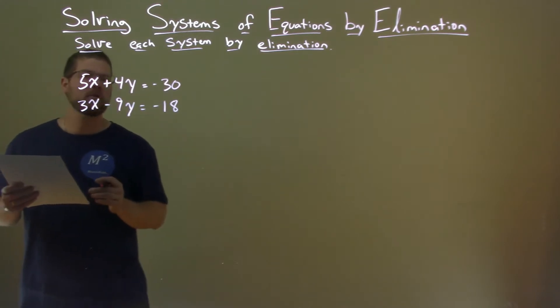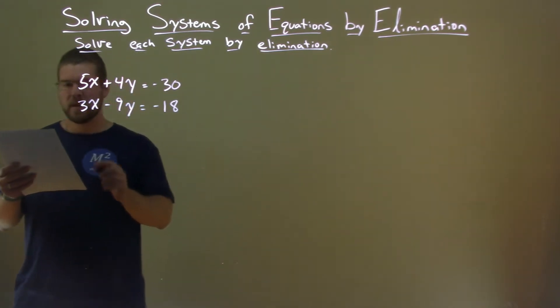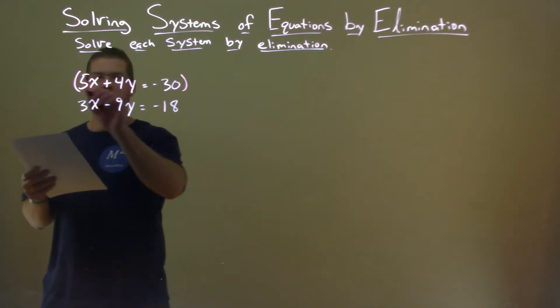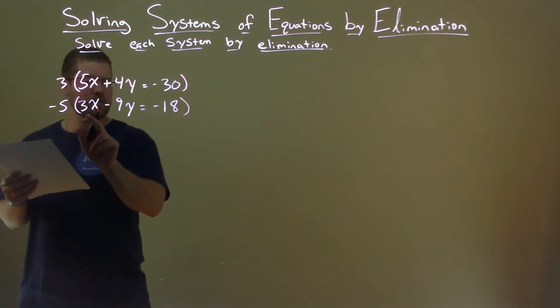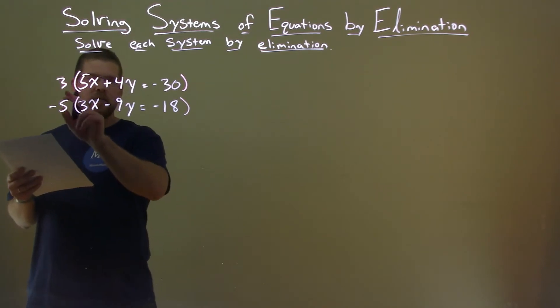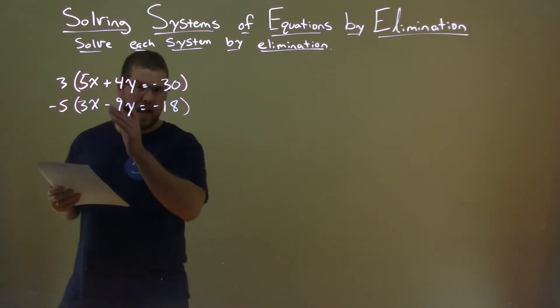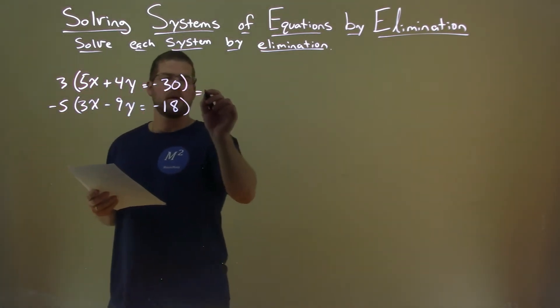Let's try to eliminate the x value first. I'm going to take the top equation and multiply it by 3. The bottom equation, multiply it by negative 5. Negative 5 times 3, negative 15. 3 times 5 is 15. The x's eliminate. So let's do that.